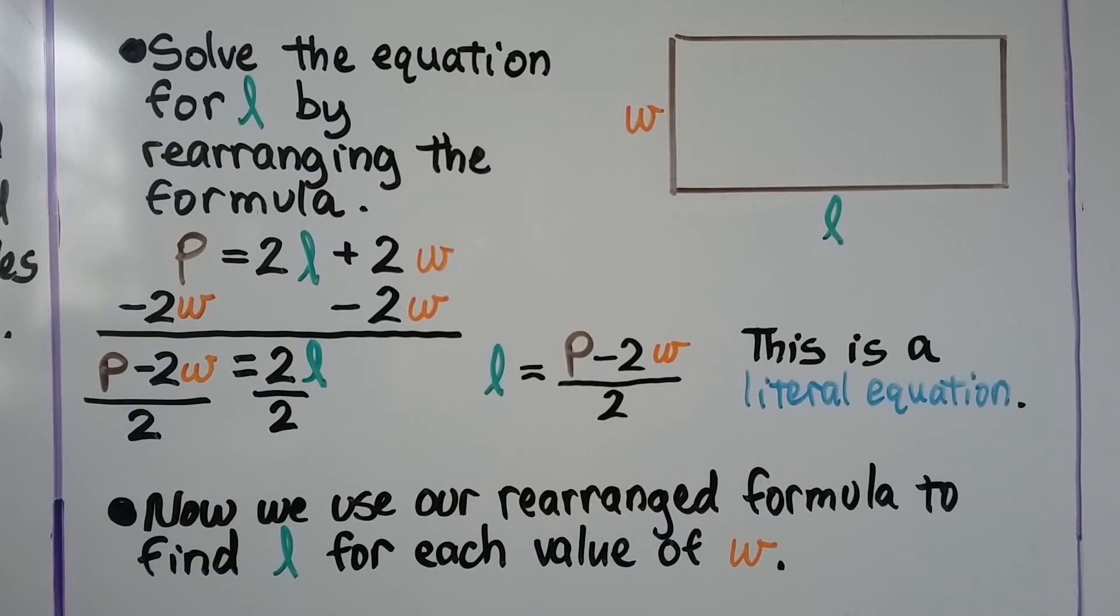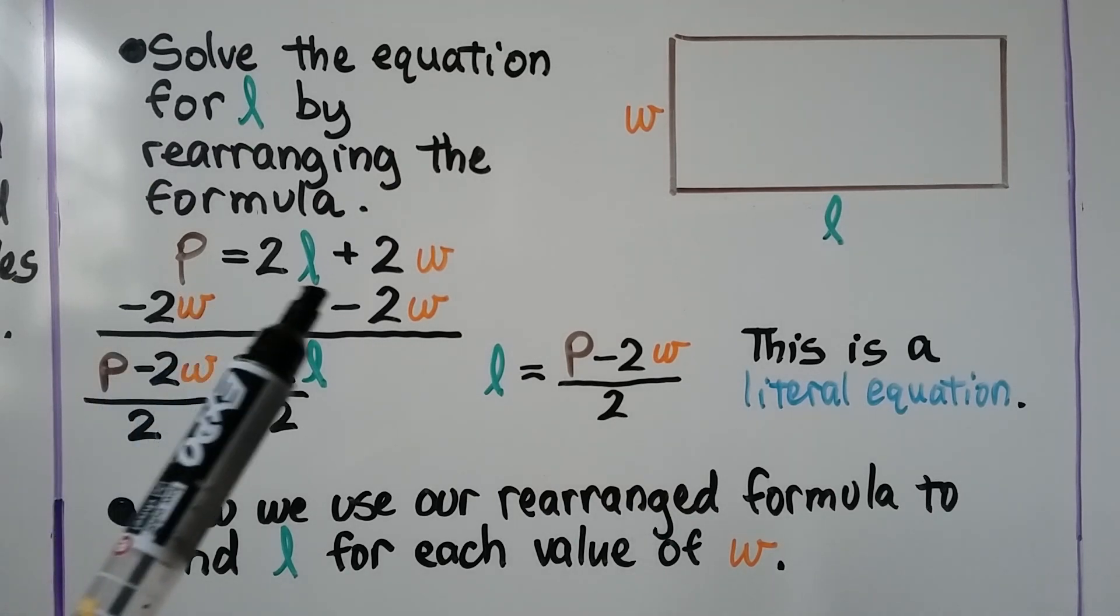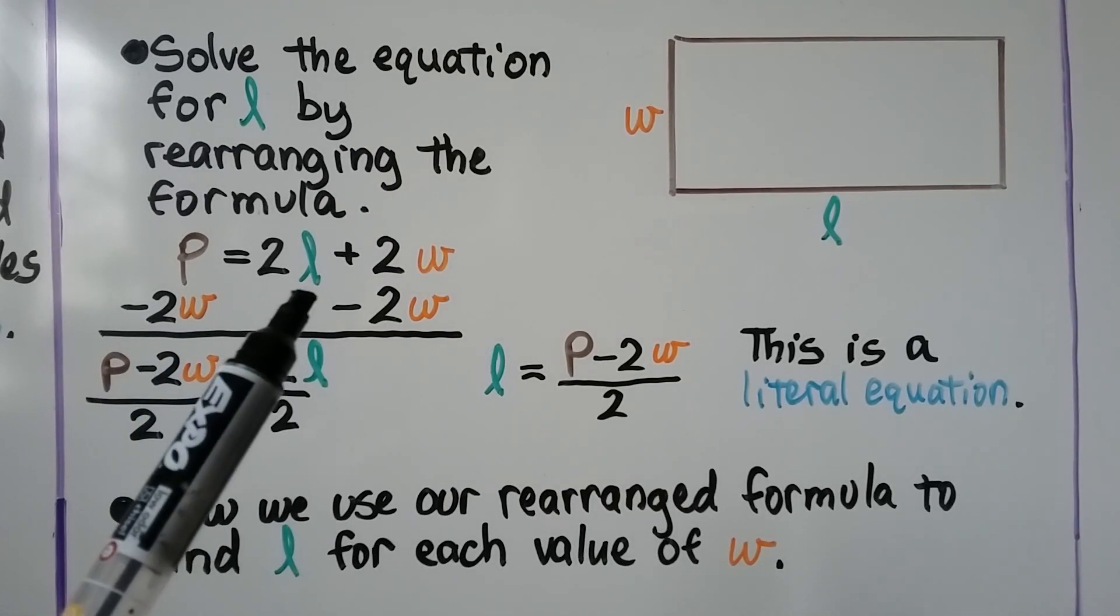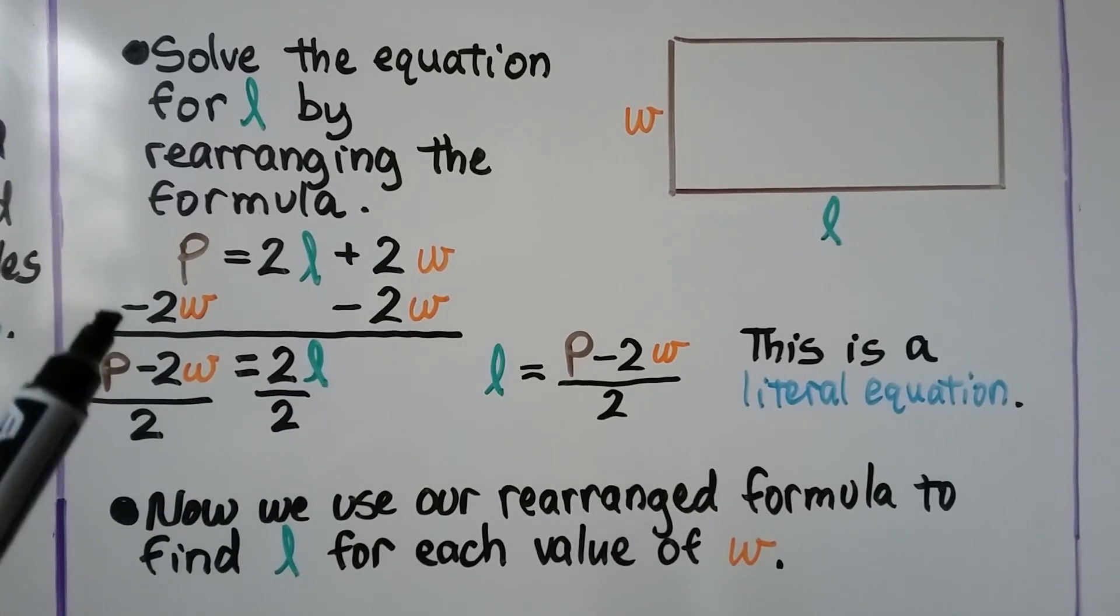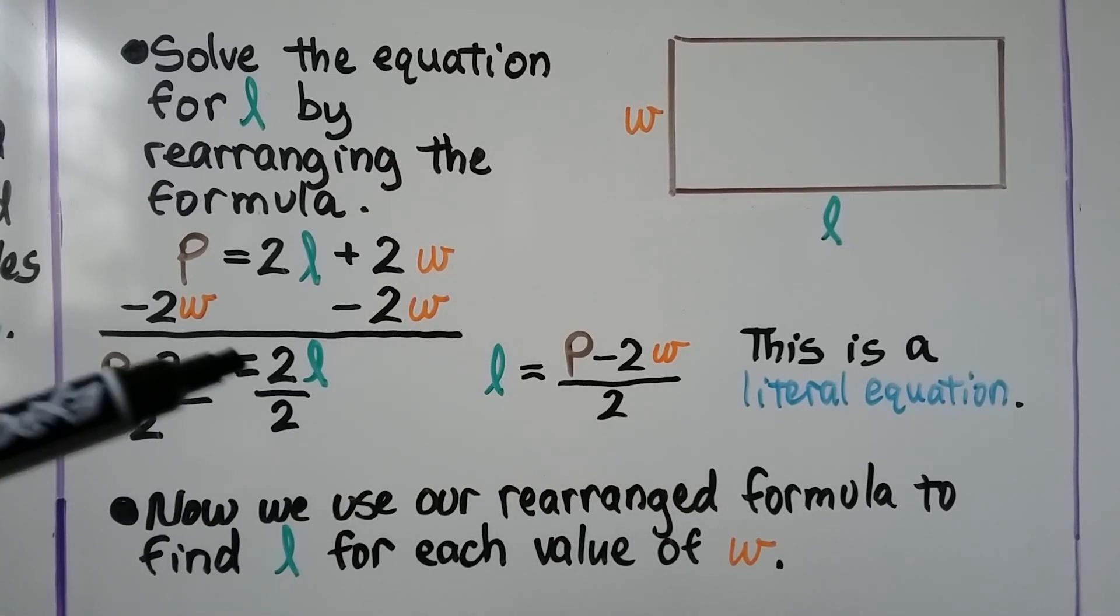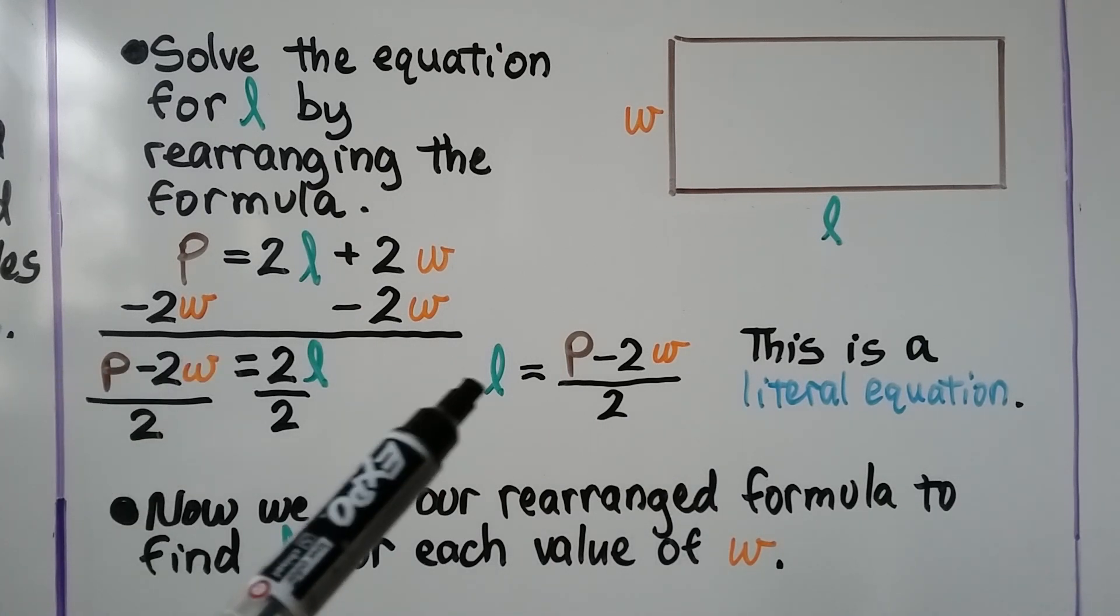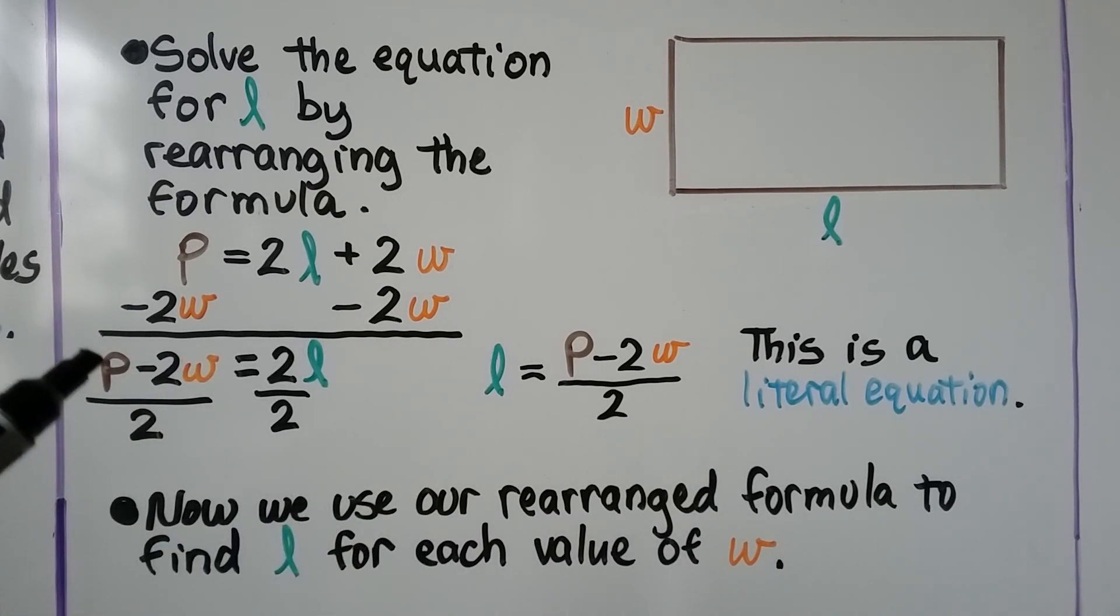We solve the equation for l by rearranging the formula. So we start with p equals 2l plus 2w. We want to solve for l, so we subtract 2w from each side of the equal sign, and that'll give us l is equal to p minus 2w divided by 2.